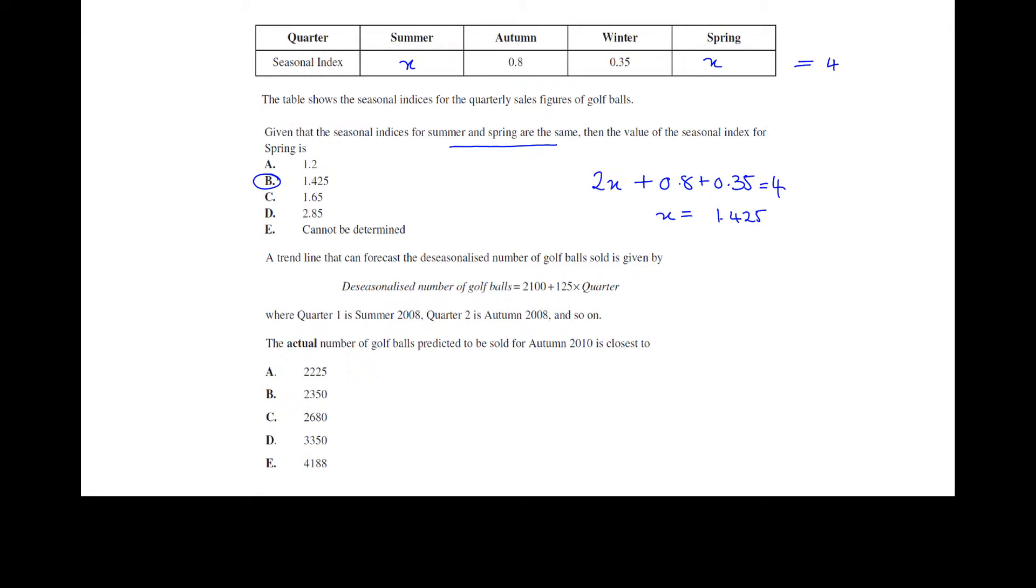The next question, a trend line that can forecast the de-seasonalized number of golf balls is given by de-seasonalized number of golf balls equals 2,100 plus 125 times the quarter, where quarter one is summer 2008 and so on. So we want to find the actual number of golf balls in autumn 2010. So firstly, note it wants the actual number of golf balls and remember most of you will have written in your notes something along the lines of the de-seasonalized value is the actual value divided by the seasonal index.